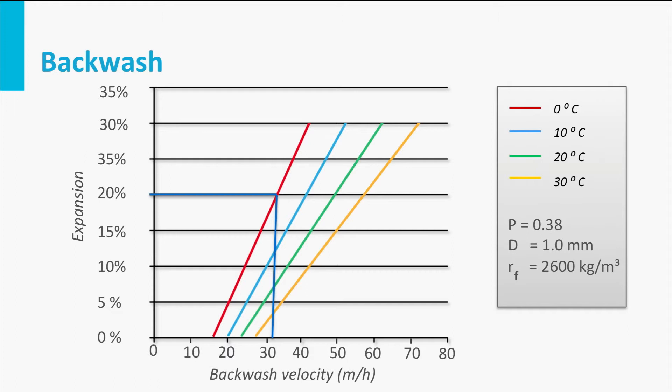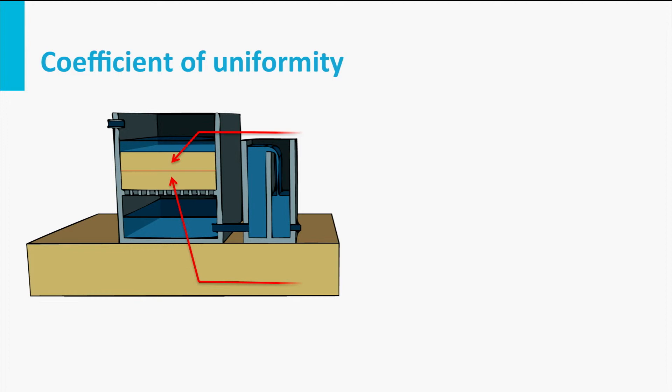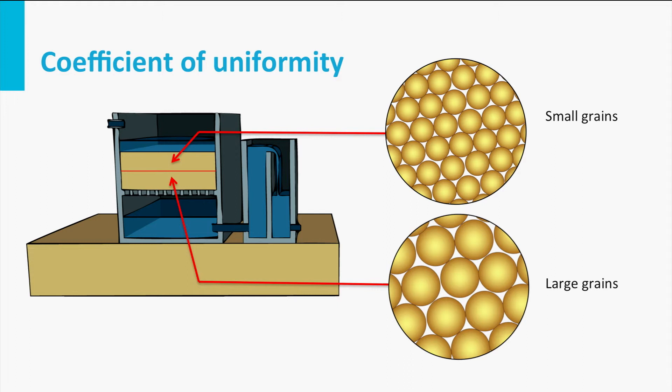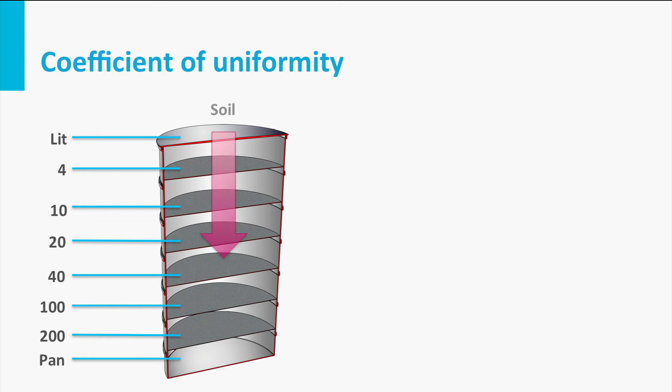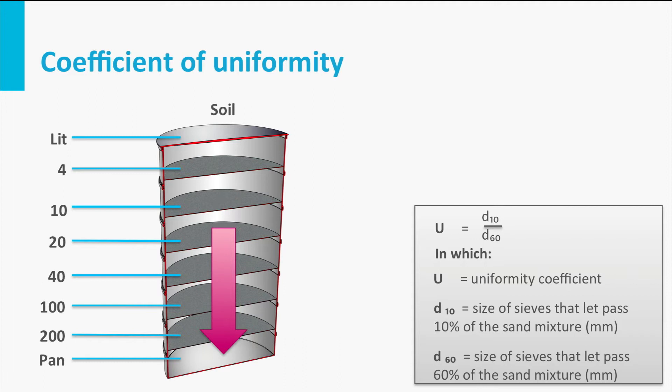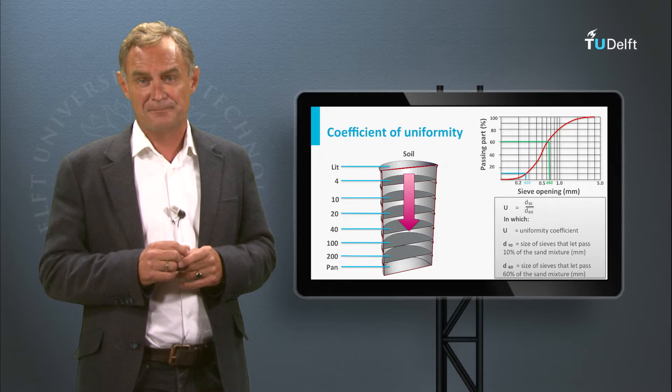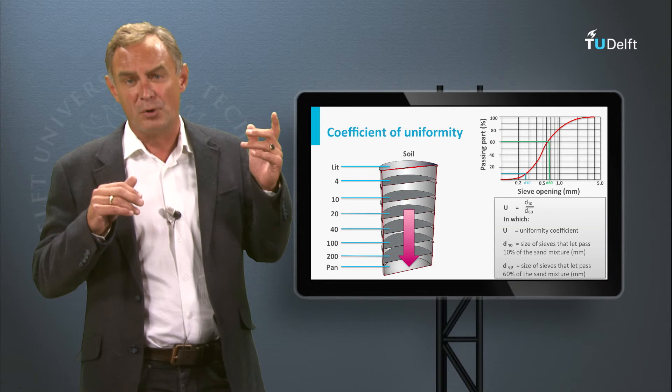To avoid that during backwashing the small grains float to the top and the larger grains settle to the bottom, the filtering material must be uniform. This can be obtained by sieving the sand and calculating the coefficient of uniformity U, determined by the quotient of the 60th and 10th percentile grain sizes. The coefficient of uniformity should maximally be between 1.3 and 1.5.